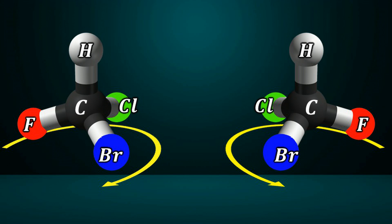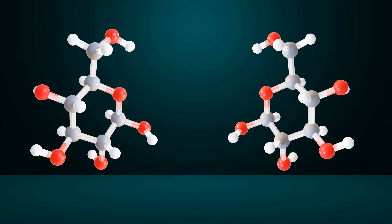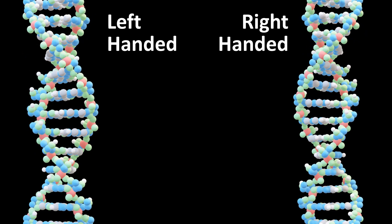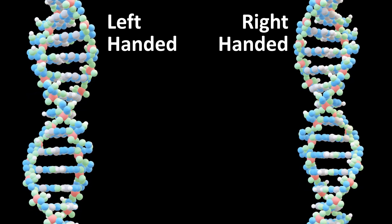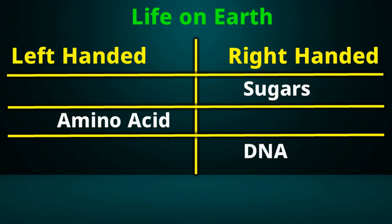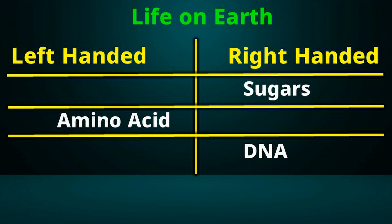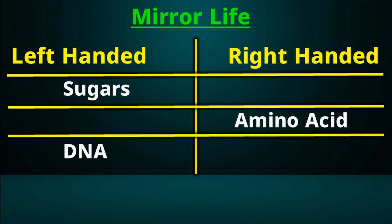What we have just seen is a very simple example of a chiral molecule. However, the chiral molecules present in our bodies are far more complex. When we say that the DNA, amino acids, and sugar molecules in our body all have left-handed and right-handed versions, this is the type of difference we are referring to. The fascinating fact is that all living organisms on earth have only right-handed sugars, left-handed amino acids, and right-handed DNA. This property, exhibited by life on earth, is called homochirality — meaning a preference for only one particular chiral form of a molecule. Mirror life refers to organisms made up of the mirror image molecules: left-handed sugars, right-handed amino acids, and left-handed DNA. That is the fundamental difference between normal life and mirror life.